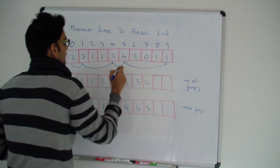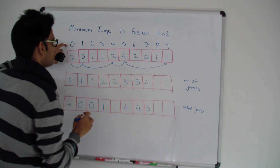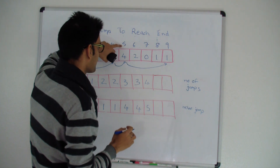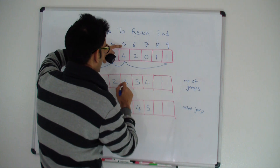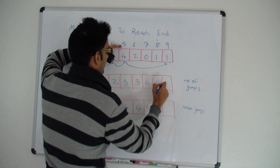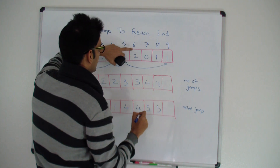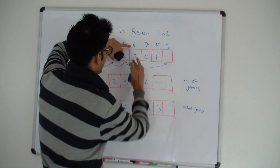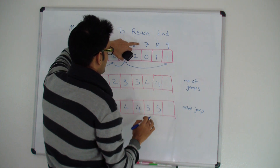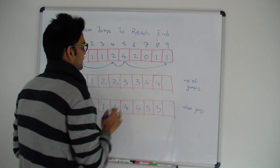For i equals eight: can you reach i from zero? No. From one? No. From two? No. From three? No. From four? No. From five? Yes. Minimum number of jumps will be whatever it takes to reach five plus one, so four. We indicate we reached eight from five. From six we can also reach eight, but the minimum stays four so we don't touch it. From seven we cannot do anything because the value at seven is zero.